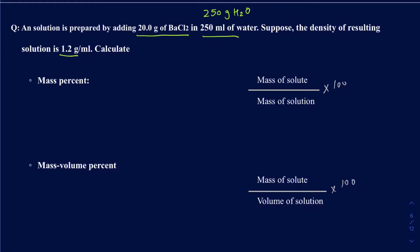Let's start with mass percent. The mass percent definition is the mass of solute divided by the mass of the solution, times 100. If we know the mass of solute and the mass of the solution, we should be able to figure out the mass percent easily.